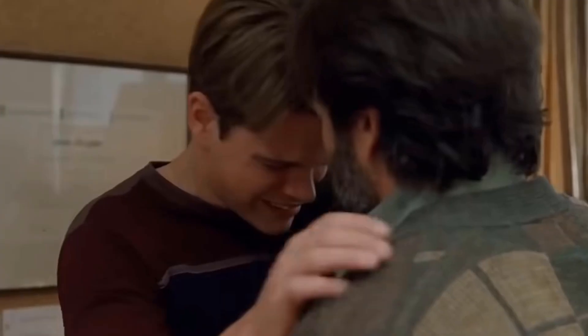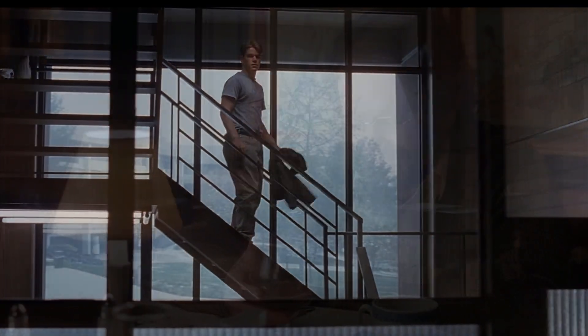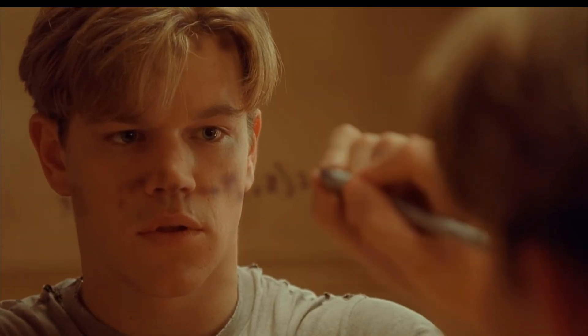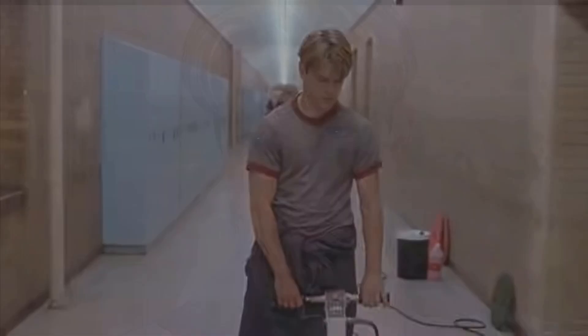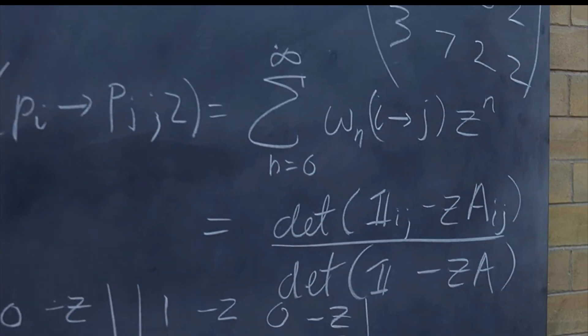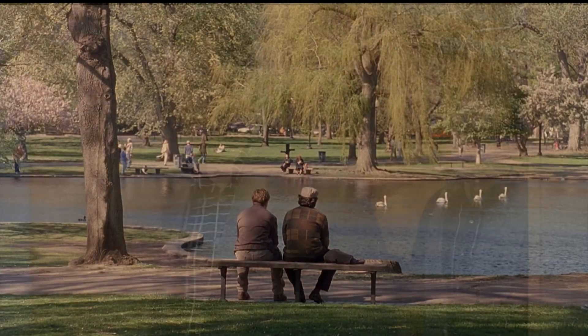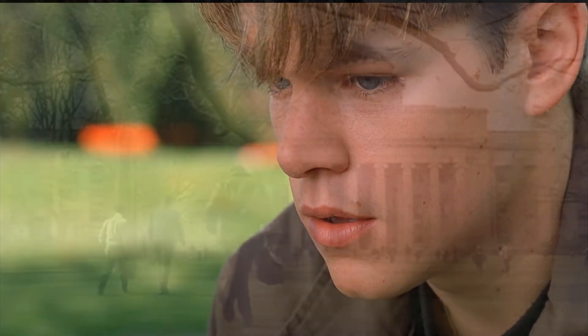Just a bit of quick background on this movie. Will Hunting is played by Matt Damon and he has this genius level IQ for maths. He chooses to work as a janitor at MIT, and eventually it's discovered that he's this genius and he has to be helped out by Robin Williams in order to recognise his potential. But anyway, there's a bit of maths in the movie that I want to have a look at, a problem I want to get you solving here.